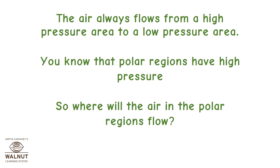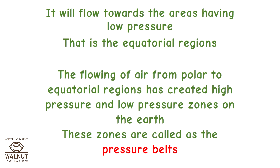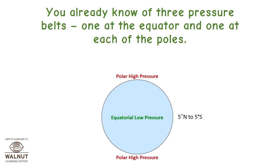Polar regions have high pressure, so the air in the polar regions flows towards areas having low pressure — that is, the equatorial regions. The flowing of air from polar to equatorial regions has created high pressure and low pressure zones on the earth. These zones are called pressure belts. You already know of three pressure belts: one at the equator and one at each of the poles.